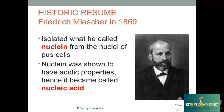In history, Frederick Miescher was a scientist in 1869. He isolated a substance from the nucleus of the first cell. This is why it is called Nucleic Acid.